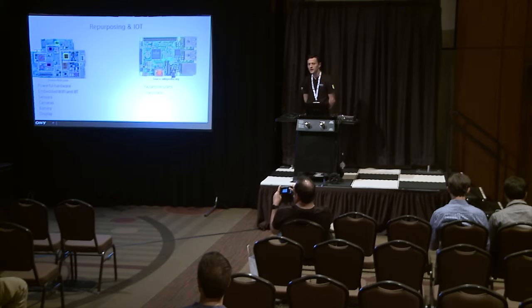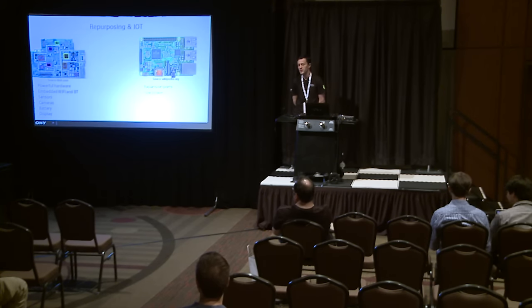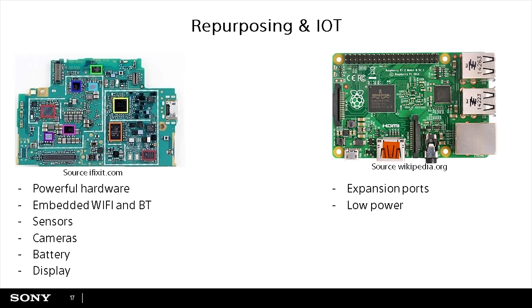Usually when your phone is old and you no longer use it, it just ends up in a drawer. Or if you smash the screen and the cost to repair it is too high, you'll simply throw it in a drawer. But what if we think outside the box — we have a very powerful 2 to 8 core platform with embedded connectivity: wireless, Bluetooth, GSM, all the sensors, cameras, maybe a battery, and a display — or if the display is broken, you have HDMI.